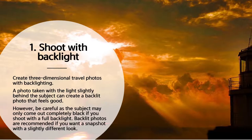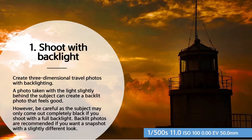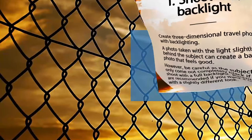Topic 1: Shoot with backlight — create three-dimensional travel photos with backlighting. A photo taken with the light slightly behind the subject can create a backlit photo that feels good. However, be careful as the subject may only come out completely black if you shoot with full backlight.